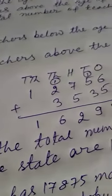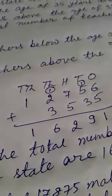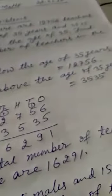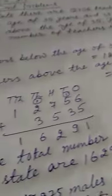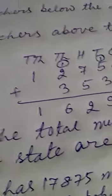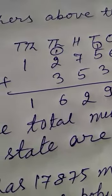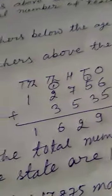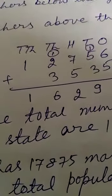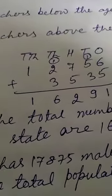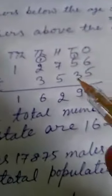The place value columns are: 10,000 place, 1,000 place, 100 place, 10s place, and 1s place. In the first row, the number is 12,756 — so 1 in 10,000 place, 2 in 1,000 place, 7 in 100 place, 5 in 10s place, and 6 in 1s place. In the second row, you will write 3,535 as you can see here.